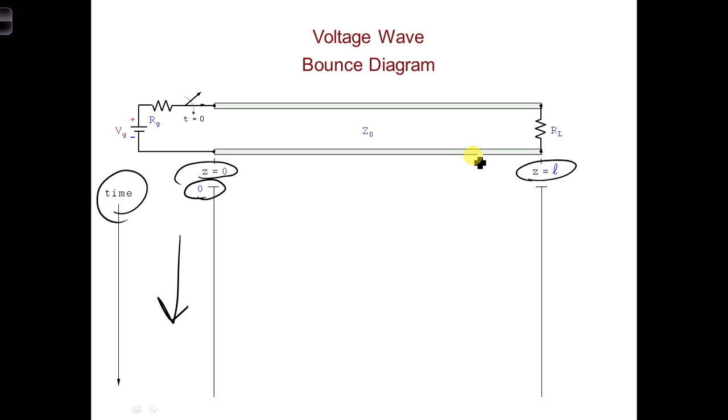Instead of going straight across, when we draw the leading edge of the V1 plus wave, time evolves as it's propagating, and the line goes slanting downwards at an angle.